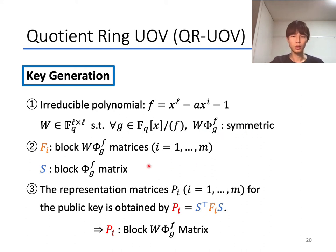Second, the representation matrices F_i for the central map are designed to be block W·Φ_g^f matrices, and S is designed to be a block Φ matrix. Then, the representation matrices of the public key P_i are computed by this equation, P_i equals S^T·F_i·S, and every P_i becomes a block W·Φ_g^f matrix.